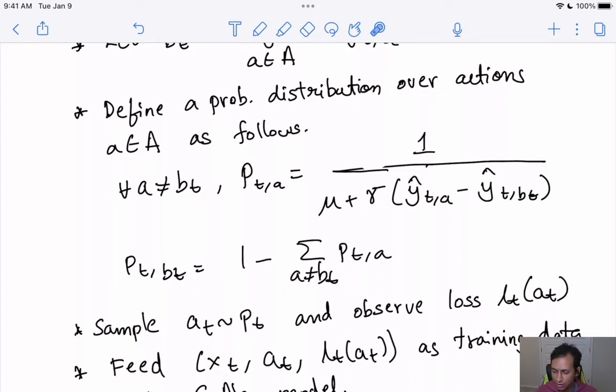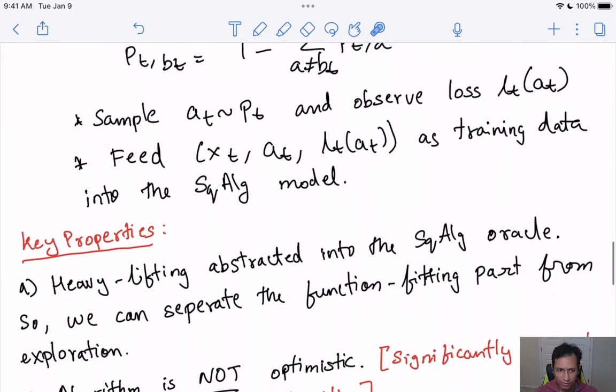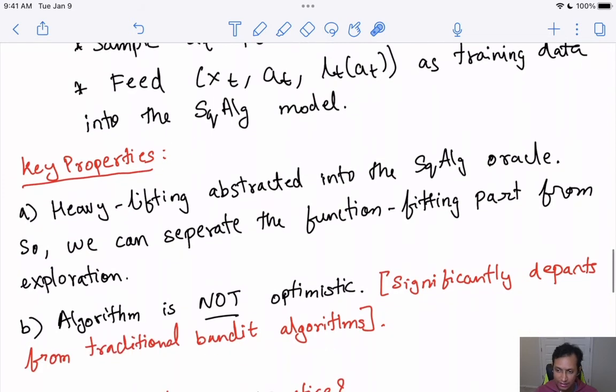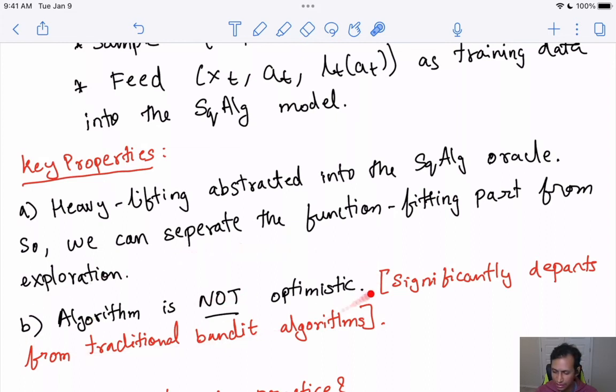This algorithm is just that simple. It almost resembles your supervised learning setup with this extra sampling step. Let's look at some key properties. The main property here is that most of the heavy lifting is actually abstracted out into the oracle, which means that you can separate two parts: the function fitting part and the exploration part. Essentially the key part of contextual bandit is about exploration, and instead of reinventing the wheel on the function fitting part, this algorithm tells us how to use the function fitting part efficiently and optimally. The second thing you would notice is this algorithm is not at all optimistic in the sense that it doesn't use any form of UCB, which is reflected in the name of the paper as well. This significantly departs from traditional bandit algorithms. In fact, there is discussion in the paper about how UCB is not the optimal strategy when your contexts are essentially adversarial. In some sense, UCB, which is commonly used in practice, is actually a non-optimal algorithm.